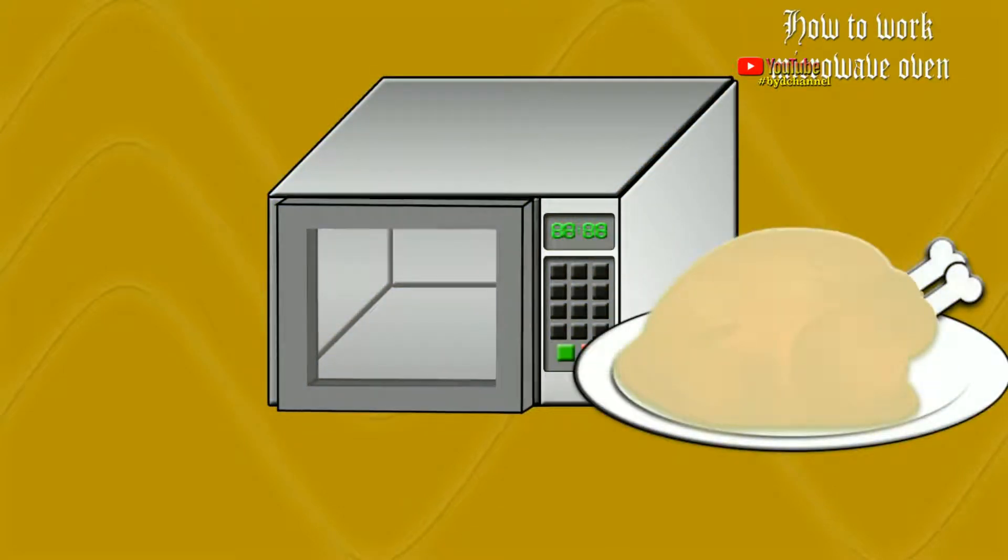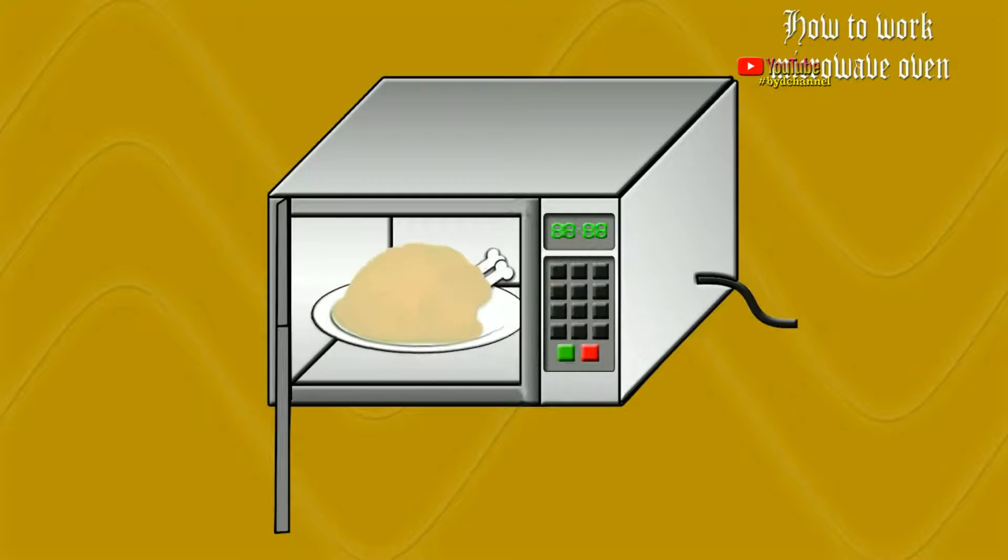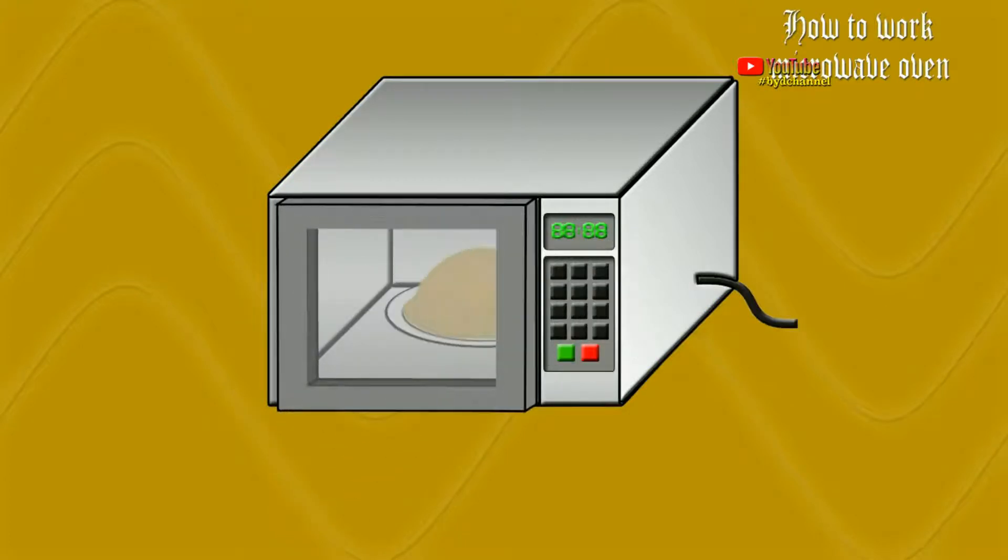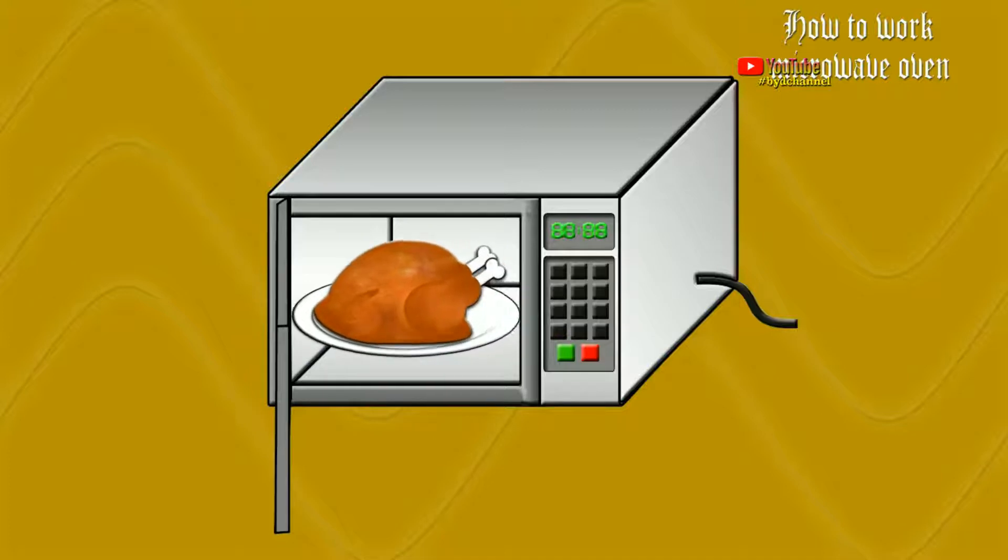Microwave ovens can work so quickly and efficiently because their electromagnetic waves penetrate food and excite water molecules and fat evenly.